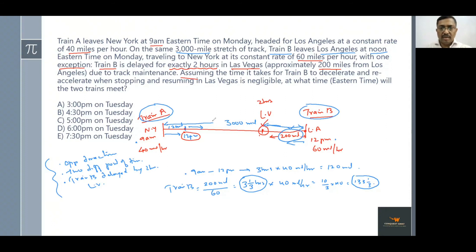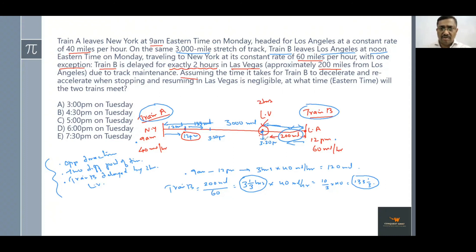So in the span of 3 hours 20 minutes from 12 noon — meaning by 3:20 PM — Train A has covered another 133⅓ miles. By the time Train B has reached Las Vegas, the time is 3:20 PM.